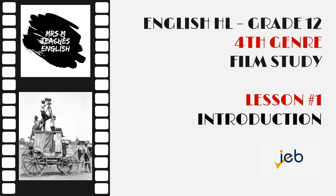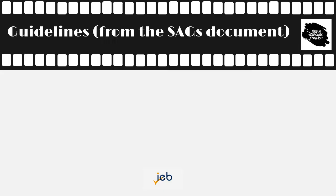This is a series of video lessons for the grade 12 English home language students within the IEB curriculum. The lessons are to be used in the fourth genre option which includes film study. Before we can start with the work we need to understand what is expected of us. For this information you need to consult the IEB subject and assessment guidelines known as the SAGS document. This gives us the framework within which we'll study the prescribed films.